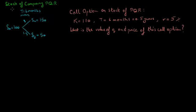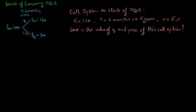We are given some details on the stock of company PQR and an option on the stock. The current price of the stock, denoted by S0, equals 100. In six months' time, with the risk-neutral probability Q, the stock price could go up to SU, which equals 150. Or with the risk-neutral probability 1 minus Q, the stock price could go down to SD, which equals 50. A call option on the stock of company PQR has a strike price of 110 and has six months, or 0.5 years, to maturity.